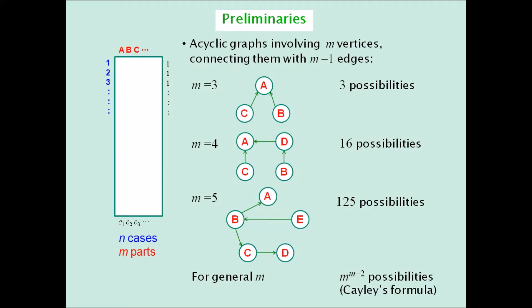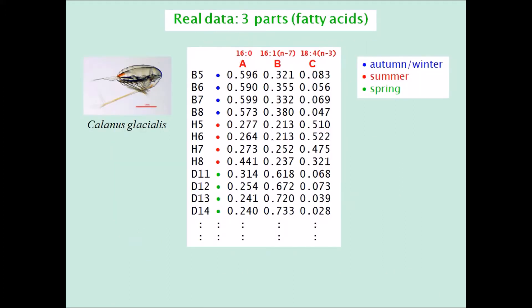Now let's look at some real data. These are fatty acid compositional data for three fatty acids, which we'll refer to simply as A, B, and C, for several samples of a minute marine copepod called Calanus glacialis.